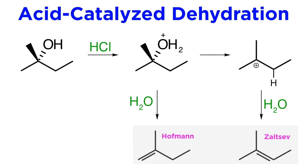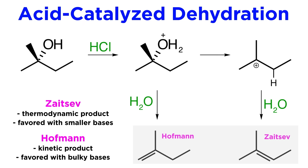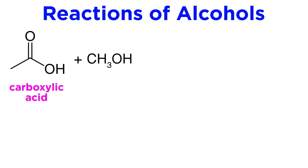We must always keep in mind the potential for Zaitsev and Hoffman products, where the more substituted Zaitsev product is preferred thermodynamically, whereas bulky bases will promote the less substituted Hoffman product under kinetic control.